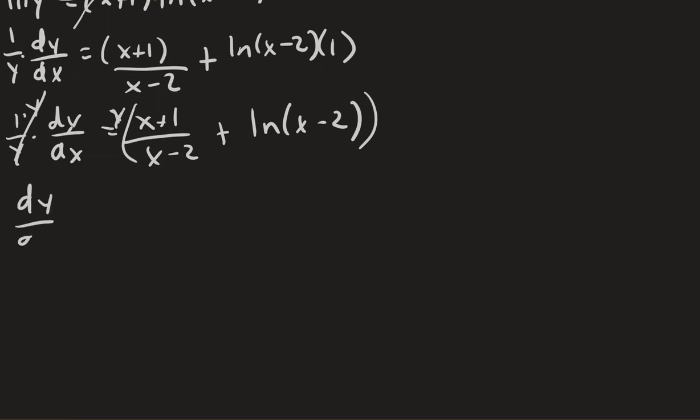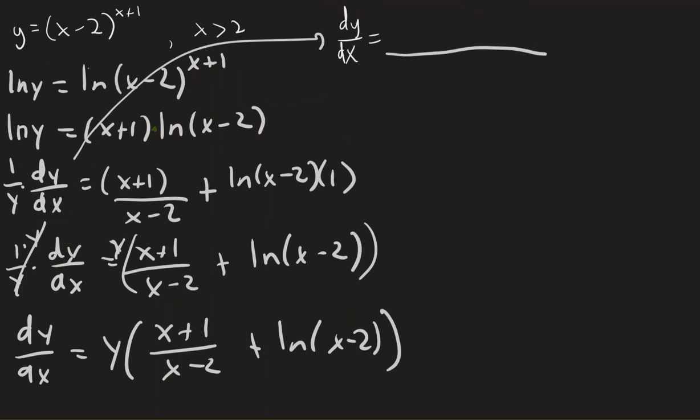And then I end up with dy dx is y times all the stuff I had. And so luckily, if we go all the way back up here to the top, in the beginning, I know what y is in terms of x. So I can substitute that down here.